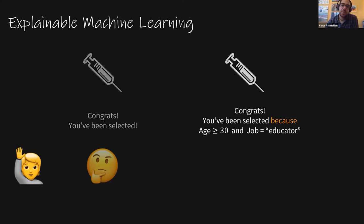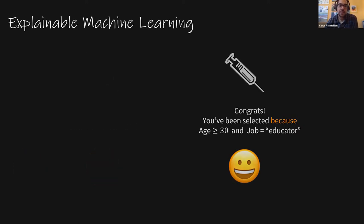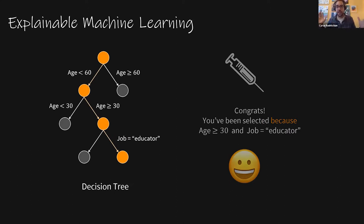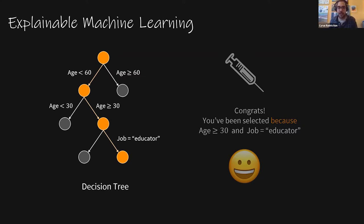The email would have been more informative if it said you've been selected because you were at least 30 years old and you're an educator. Then you'd be happy because you get the vaccine, and you can also provide an explanation to your friends. These types of explanations can be added to a whole variety of algorithms. One way to do so is to use a decision tree — a simple binary tree where each node has a binary yes-or-no question, like are you at least 60, or is your job an educator.